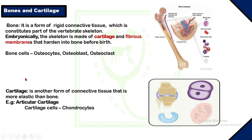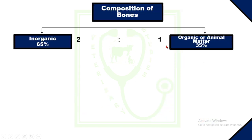Cartilage is another form of connective tissue that is more elastic than bone. Its elasticity makes it a more flexible portion of the skeleton — for example, articular cartilage which is found in the joints. The cells of cartilage are called chondrocytes.